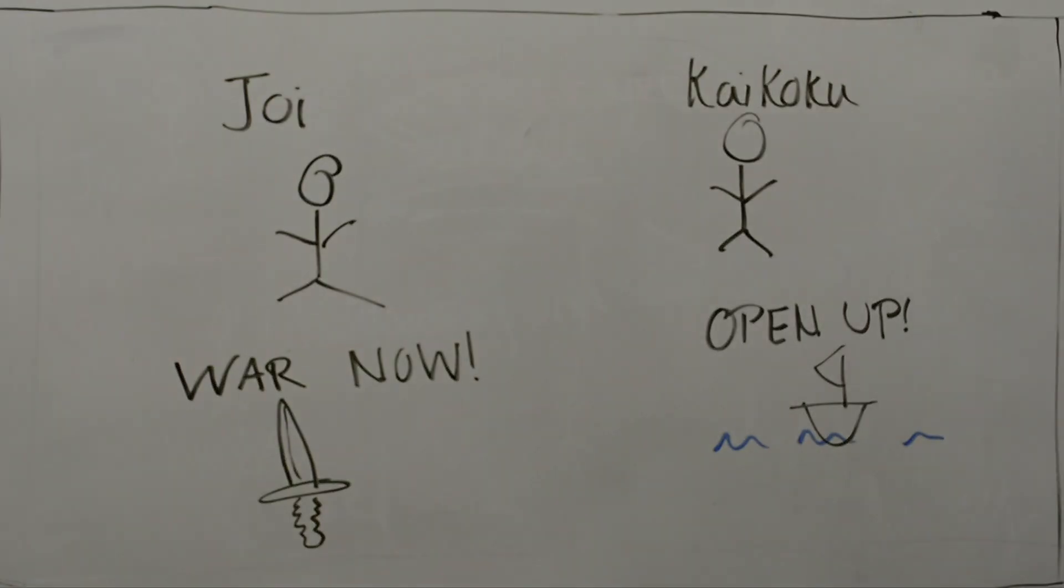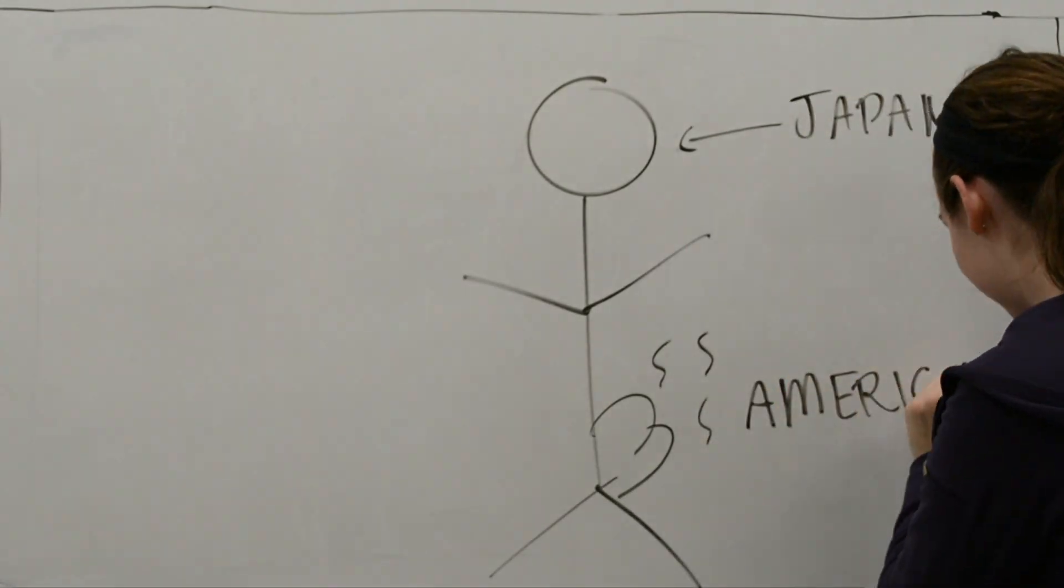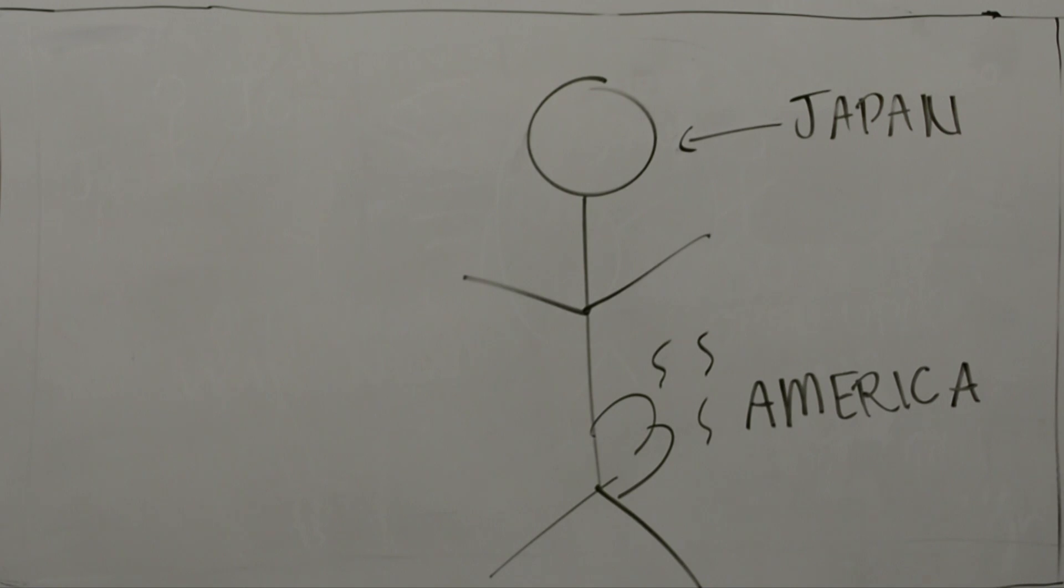One samurai, Seshisai, worried about opening trade with foreigners, believing they were inferior. According to him, countries, particularly America, were located at the rear end of the world. They were, therefore, barbaric.